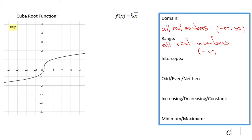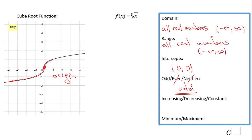In interval notation: negative infinity to infinity. We have only one intercept, which is both the x and y intercept at (0, 0). The function is symmetrical with respect to the origin, so it is odd. It is increasing all the time — slowly — never decreasing, never constant. It is increasing on its entire domain, all real numbers. We do not have a minimum and we do not have a maximum.